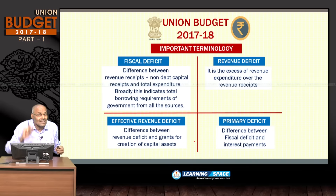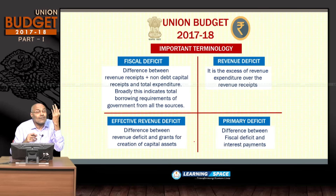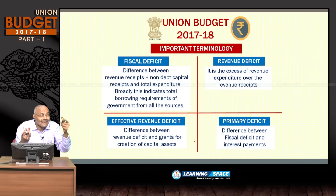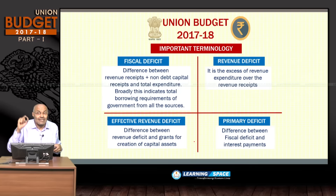Effective revenue deficit is the difference between revenue deficit and grants for creation of capital assets. When the central government gives grants to state governments, that is revenue expenditure; when it gives loans, that is capital expenditure. Grants will not be paid back. Primary deficit is the difference between fiscal deficit and interest payments.